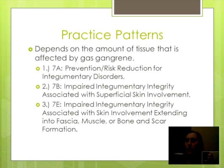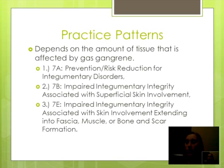The practice pattern used depends on the amount of tissue that is affected by gas gangrene. You can use one of three practice patterns: 7a, 7b, or 7e. 7a is the prevention and risk reduction for integumentary disorders. 7b is impaired integumentary integrity associated with superficial skin involvement. 7e is impaired integumentary integrity associated with skin involvement extending into fascia, muscle, or bone, and scar formation.